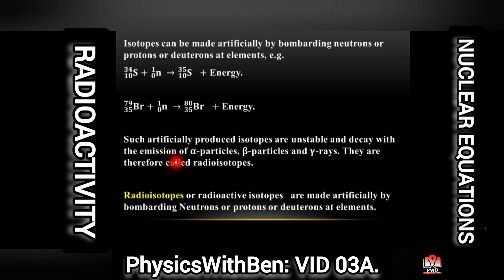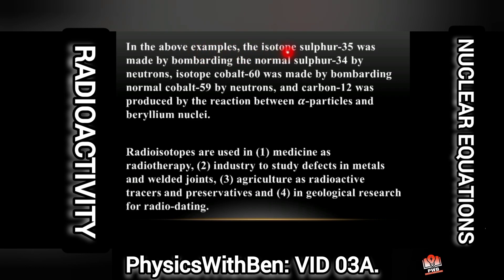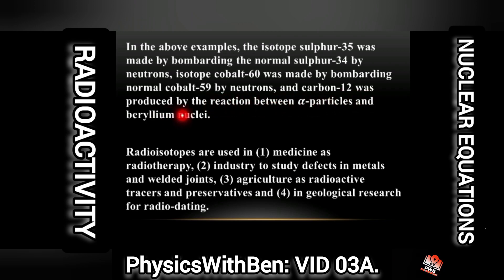They are henceforth called radioisotopes. Radioisotopes, or radioactive isotopes, are made artificially by bombarding neutrons or protons at elements. For example, the isotope sulfur-35 was made by bombarding normal sulfur-34 with neutrons. Cobalt-60 was made by bombarding normal cobalt-59 with neutrons. And carbon-12 was produced by the reaction between alpha particles and beryllium nuclei.